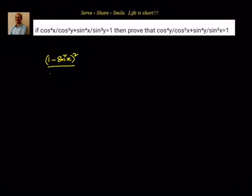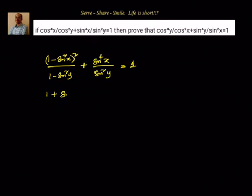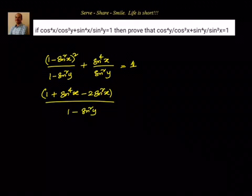cos⁴x — how can we write it? (1 − sin²x)² divided by (1 − sin²y), plus sin⁴x divided by sin²y, equals 1. Now let us open the bracket: we will have 1 + sin⁴x − 2sin²x divided by (1 − sin²y), plus sin⁴x divided by sin²y, equals 1. Let us take LCM.